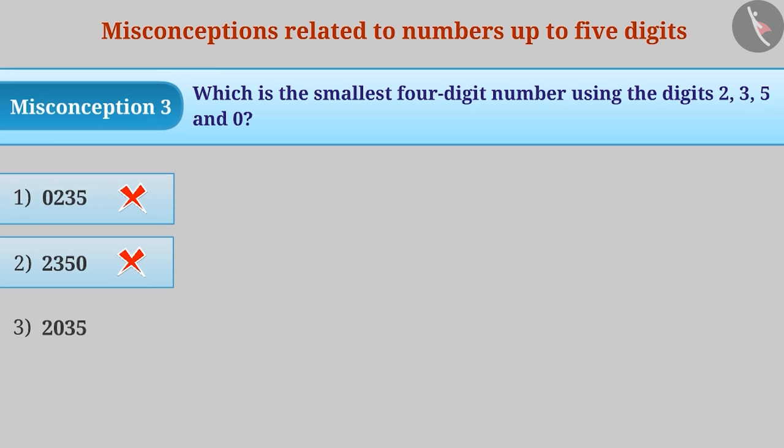The correct understanding is that a number cannot begin with 0, so it should be written after the smallest non-zero number. With this understanding, the correct answer is 2, 0, 3, 5.